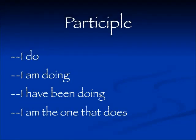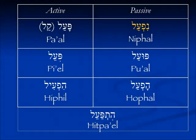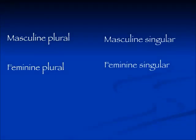We've been working in the participle tense, which has all these meanings in Hebrew: I do, I am doing, I have been doing, or I am the person that does that thing. Remember that the participle has four forms: a masculine singular, a feminine singular, a masculine plural, and a feminine plural.